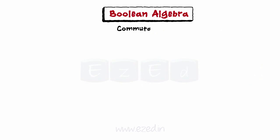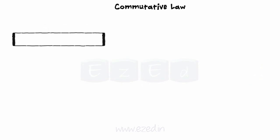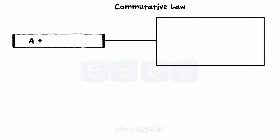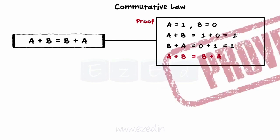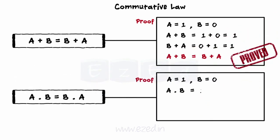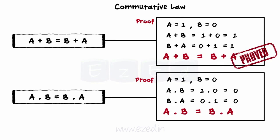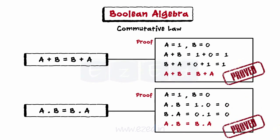Let's start with the commutative law. The expressions of commutative law are: a plus b equals b plus a. Let a equals 1 and b equals 0. Thus, a plus b equals 1 and b plus a equals 1. The law is proved. The second statement is a dot b equals b dot a. Taking the same values, we find that both the answers are the same, so the second statement is also proved.